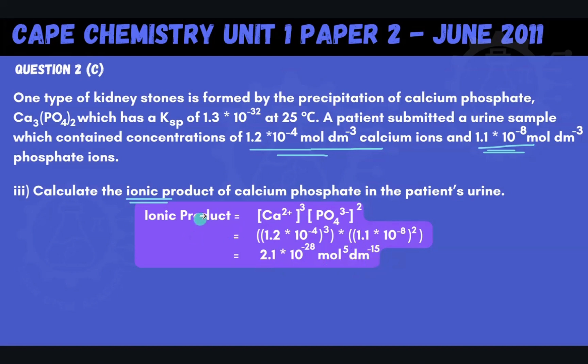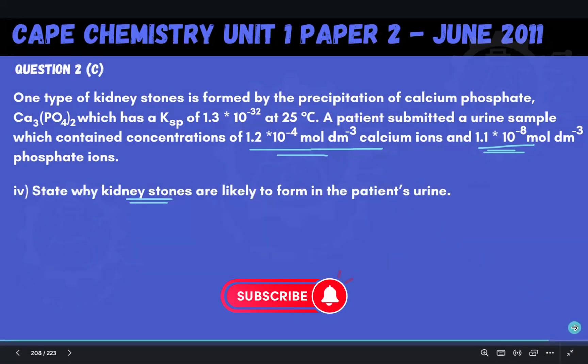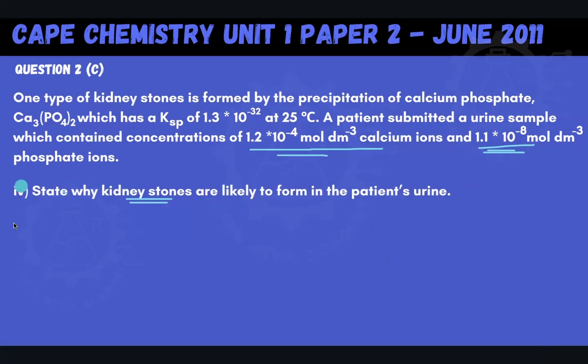So now we've gotten the ionic product of calcium phosphate in the patient's urine, and now we're going to move on to this final question now, which is asking us, state why kidney stones are likely to form in the patient's urine. Now let's go back to the original statement up here. It says that one type of kidney stone is formed by the precipitation of calcium phosphate.